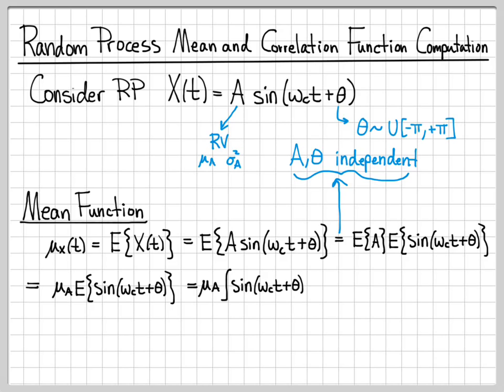To take the expected value of something, I need to take an integral of that thing weighted by the density that I'm going to encounter of the random quantity. Here the random quantity is theta, which is uniform between minus pi and pi. So the density function of the random part is 1 over 2 pi. And I need to integrate that over the entire density, minus pi to pi. So all we've done here is use the definition of expectation for our particular case here.